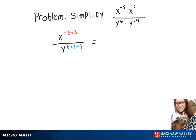Now we have x to the negative 2 over y squared. And then since we have a negative exponent on that x, we can move that to the bottom. So our final answer is going to be 1 over x squared times y squared.